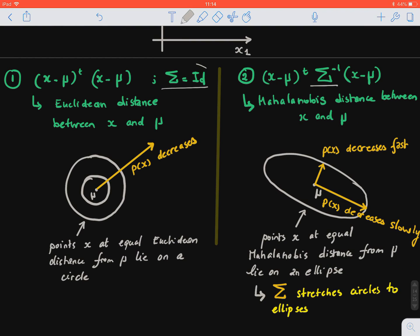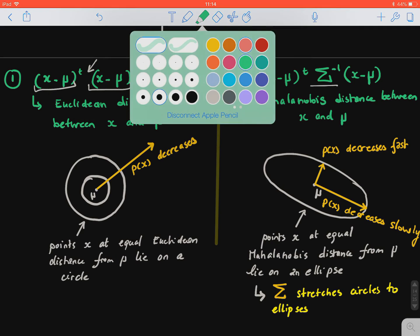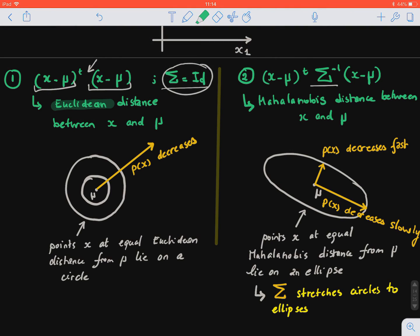So in the special case where Σ is equal to the identity, so it kind of disappears here, so we only end up with having a dot product between (x - μ)ᵀ times (x - μ), and this is actually the Euclidean distance.